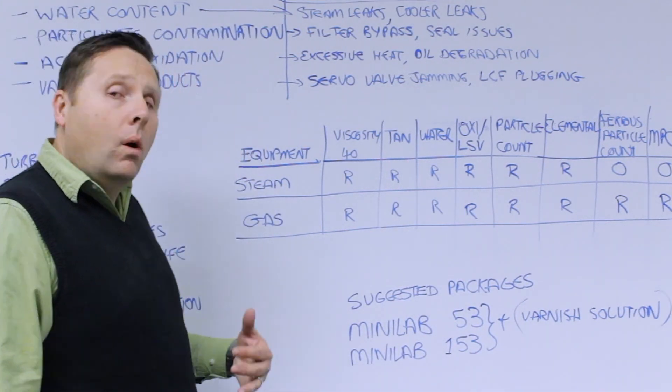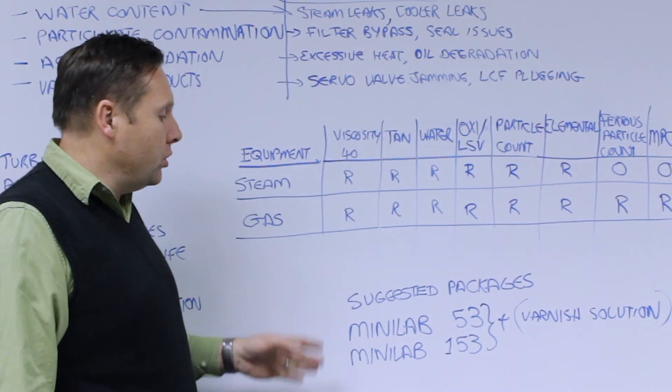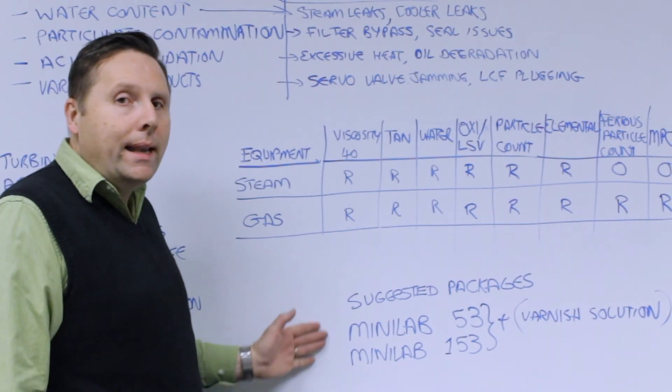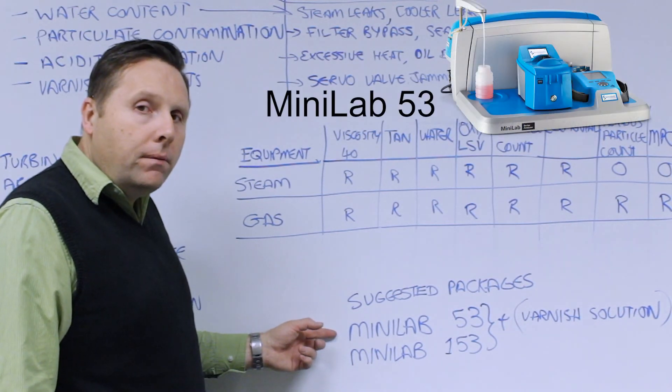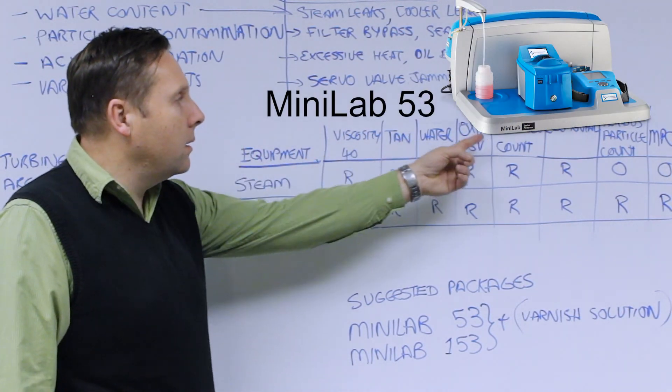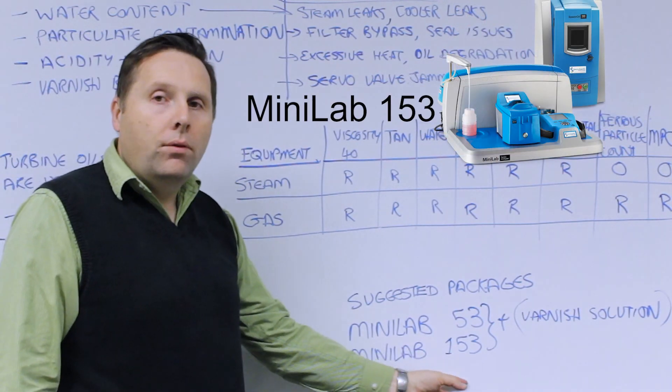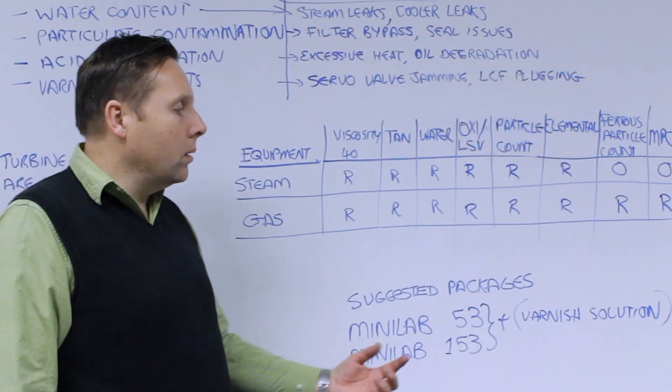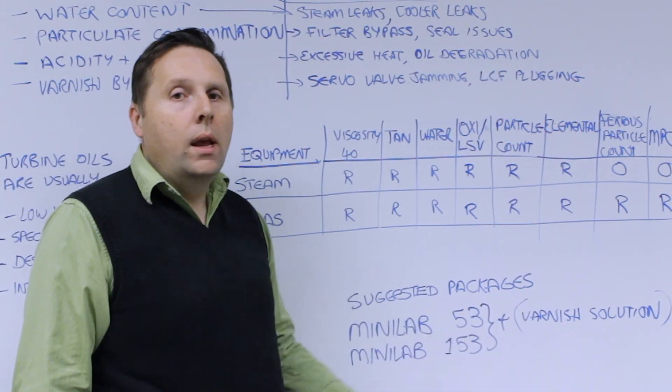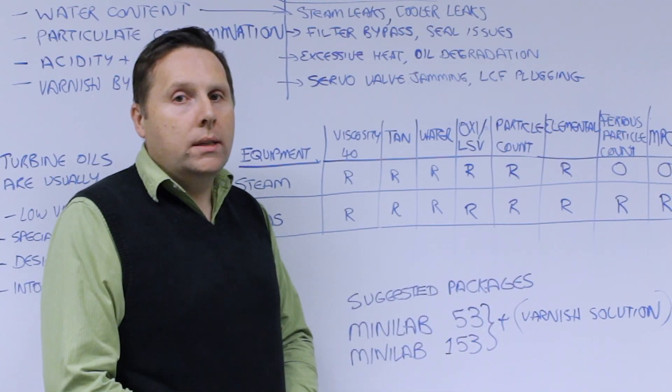So because of that what we recommend is suggested packages for the power generation industry are all based on our MiniLab industrial suite. So we definitely recommend at least a MiniLab 53 because it's got the key tests in terms of particles and contamination. The MiniLab 153 adds the elemental and of course we do recommend that you also consider a varnish solution as well anytime you're rolling out your package for your on-site analysis.